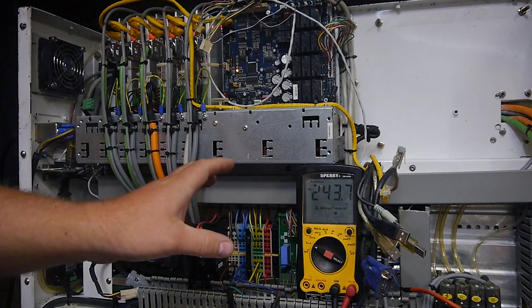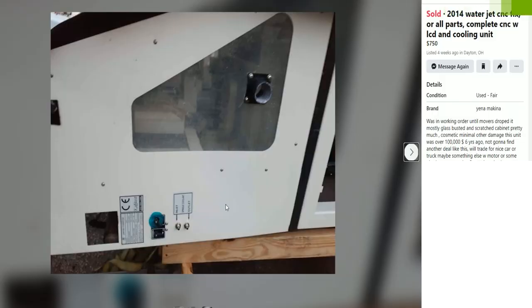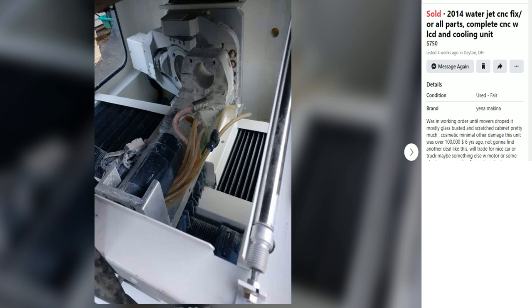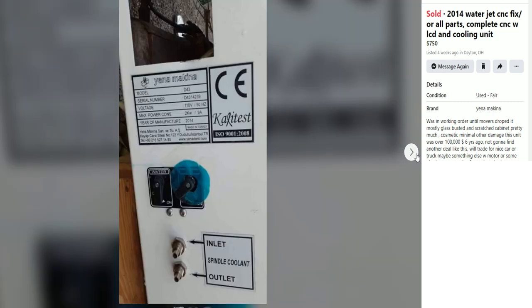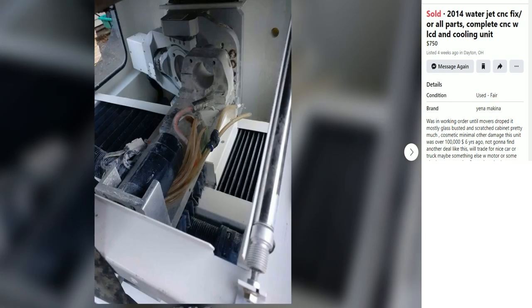This thing sat out in the rain for two weeks. Two weeks! Hey everyone, welcome back to the shop. Glad you can be here. Hey, I came across this listing on Facebook Marketplace. It consisted of three pictures, one showing the inside, one showing a nameplate, and one kind of showing that same nameplate side with unbroken, mostly, glass. But the description reads, was in working order until movers dropped it. Mostly glass busted. Says it was $100,000 six years ago. He's willing to trade, and he's calling it a water jet CNC, and it's a complete unit with LCD.